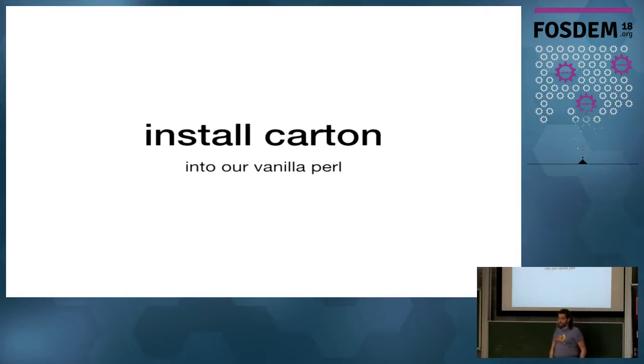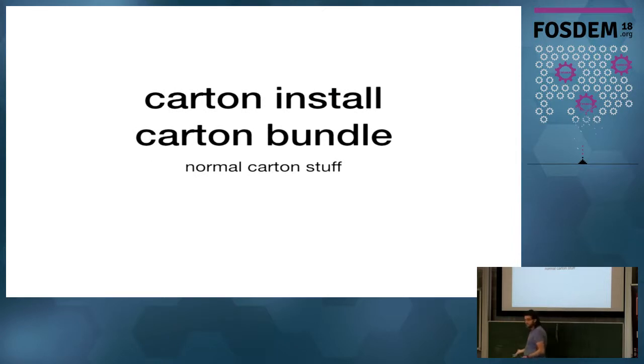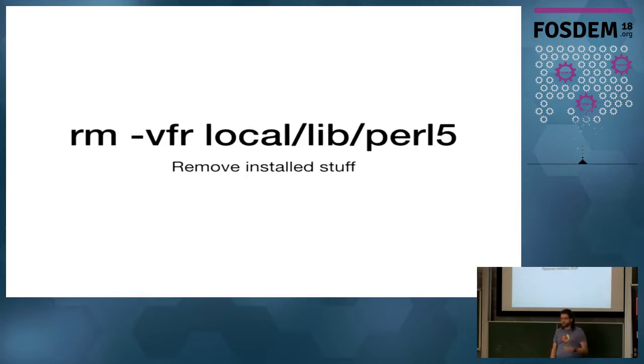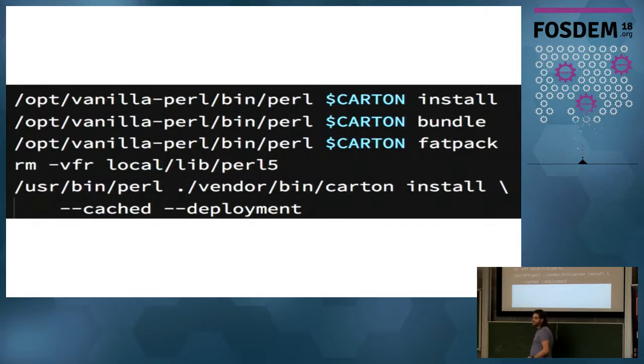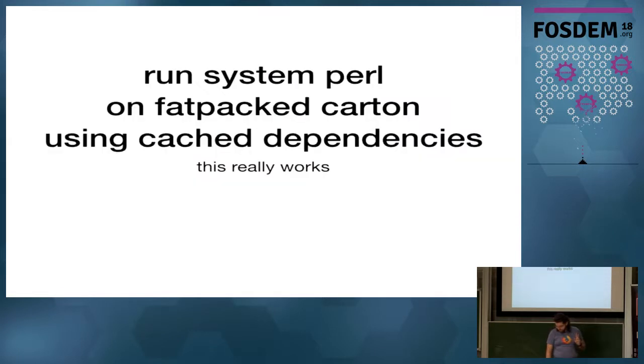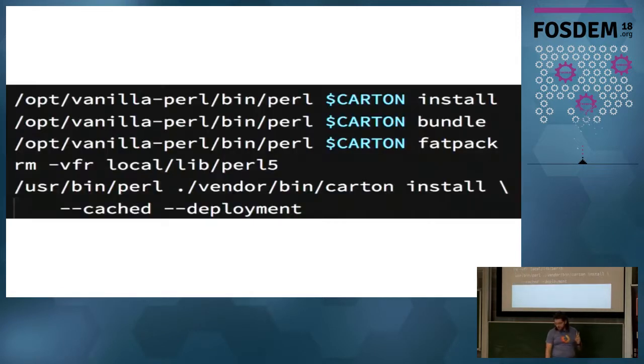So then you have your own Perl. You install Carton into that Perl. And then you have Carton install all of its dependencies, and you have Carton Fat Pack itself. That means that the Carton executable gets put into a directory inside the local directory that it manages. And then you just get rid of all of that. We throw away all of our hopes and dreams, and we start using the system Perl again. So we use the system Perl to reinstall Carton. We rerun the Carton install using the fat-packed version.